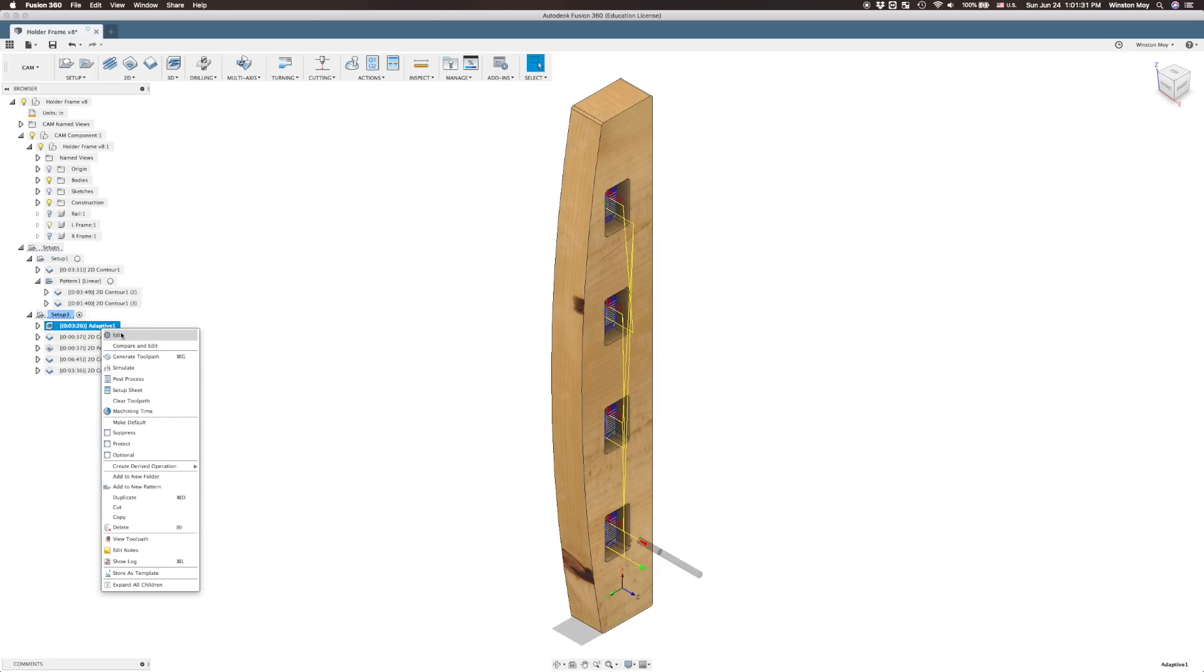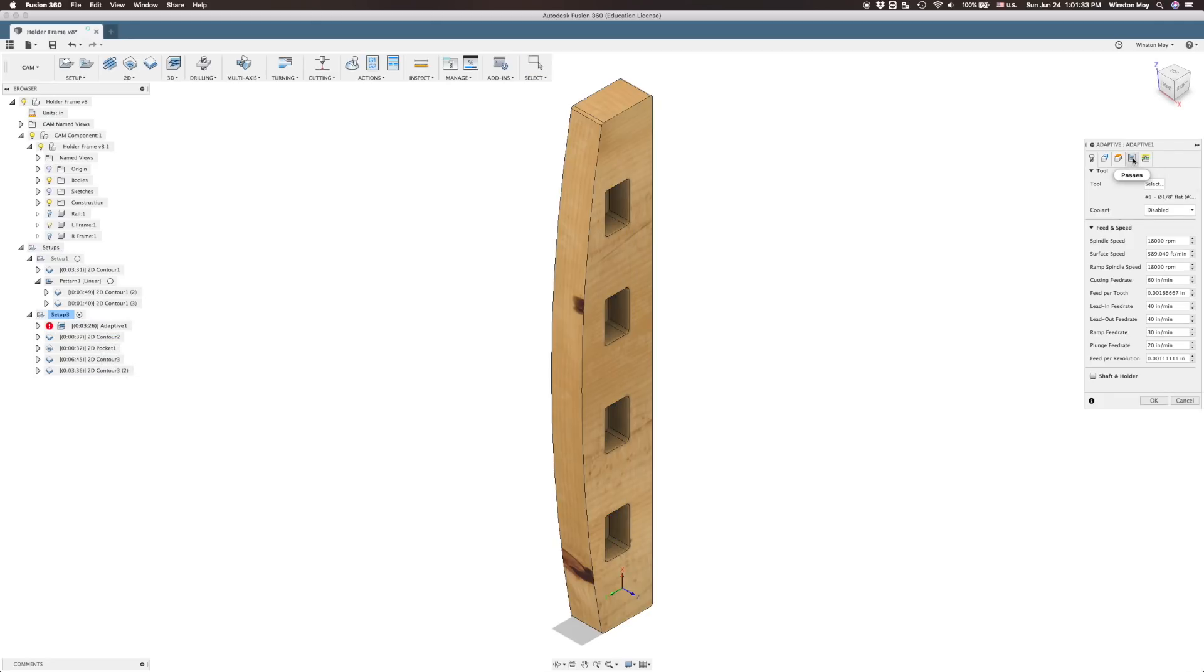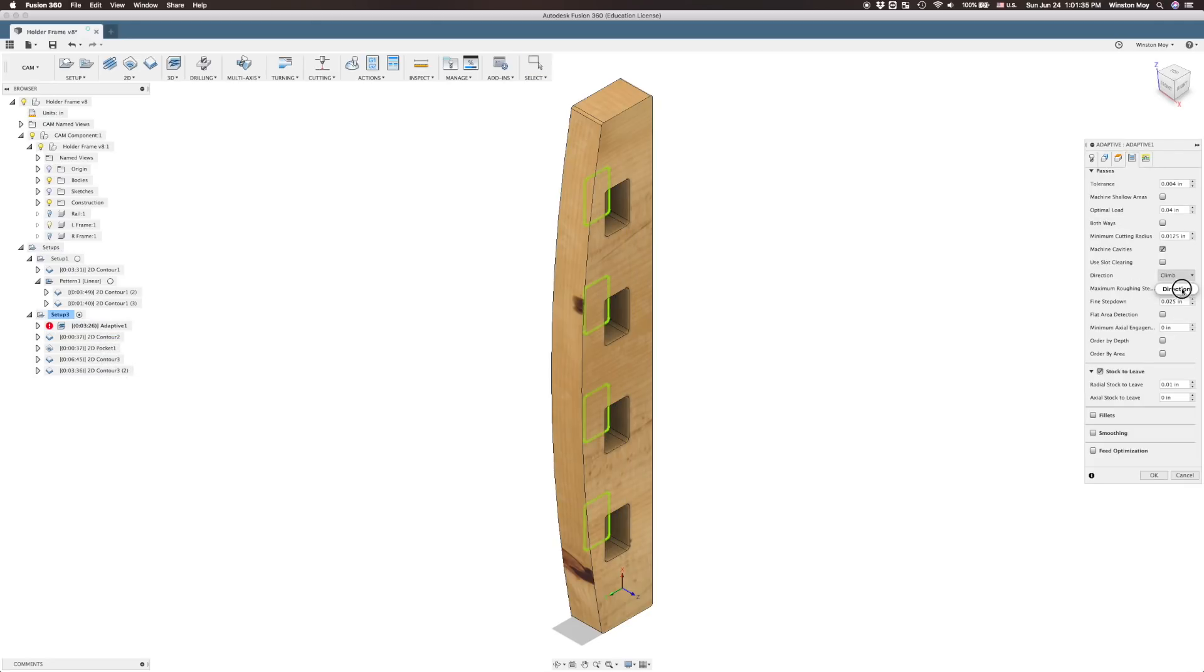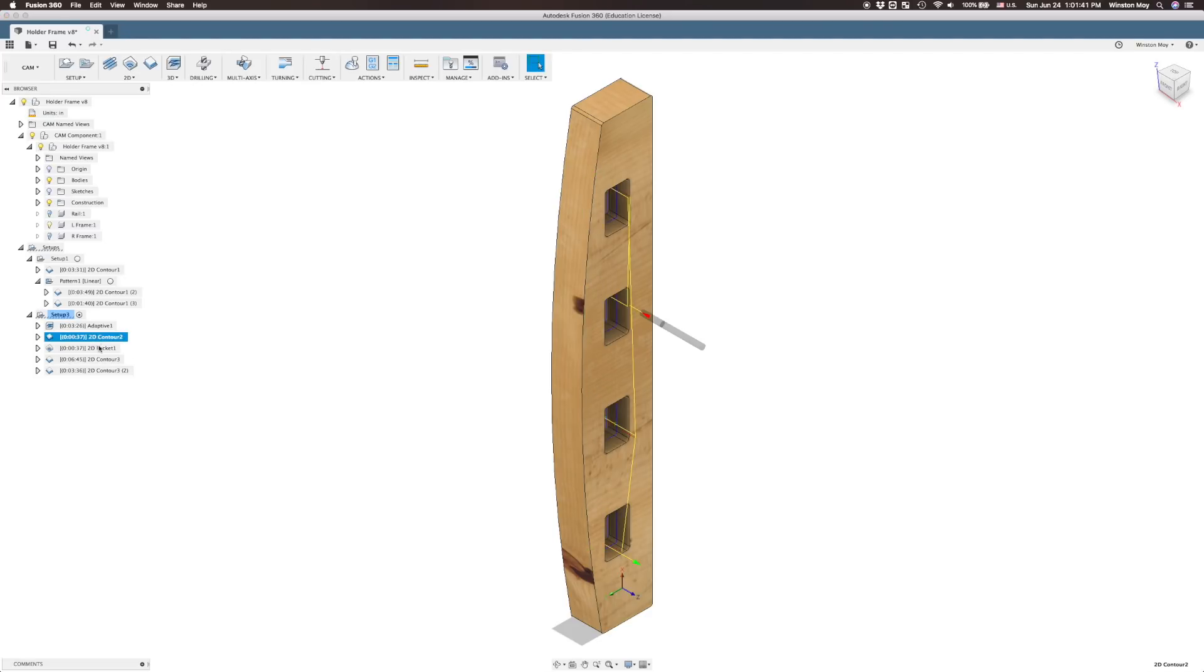Now, for the end caps, I'll adaptive clear the pockets because it's the right thing to do. Quarter inch step downs will exercise a greater length of my flutes on my eighth inch long reach end mill. Next, we'll contour finish the walls, then clean up the floor of the pocket even though no one's ever going to see this, it's just good practice.